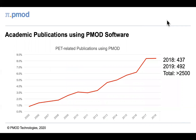We're very proud of our publication record, with PMOD cited in more than 2,500 papers — specifically 437 in 2018 and 492 in 2019 — representing nearly 9% of the PET MeSH term literature.